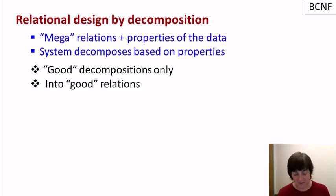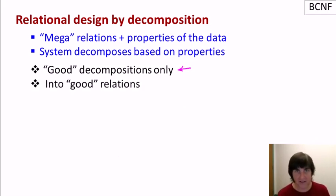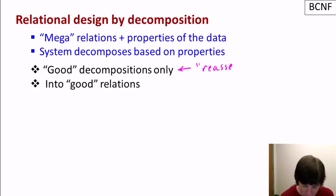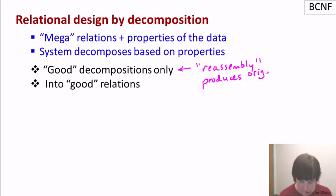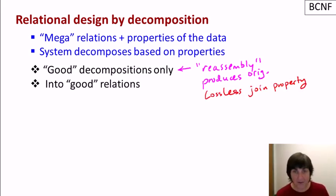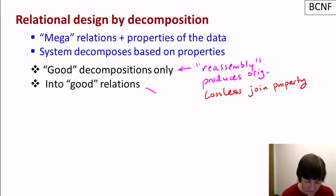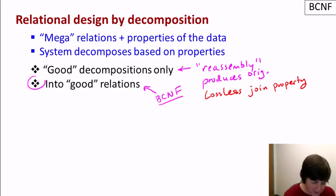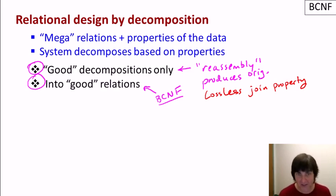So a good decomposition must capture all attributes, but the more important property is that reassembly by the join produces the original relation — sometimes called the lossless join property. We also want the relations we decompose into to be good relations — specifically, relations in Boyce-Codd normal form. Now let's formally define BCNF, and then we'll give an algorithm for automatically decomposing relations into BCNF.